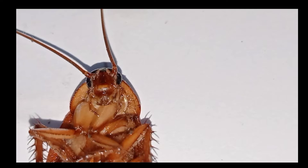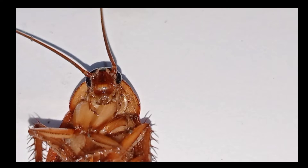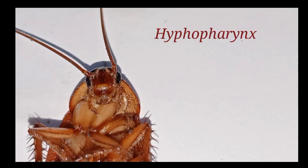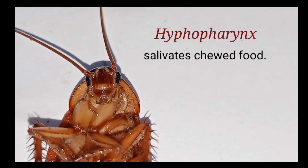And the upper lip, labrum, and the lower lip, labium. The hypopharynx is also present to salivate the chewed food.